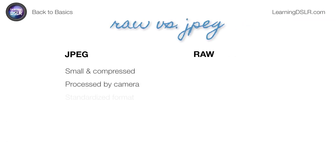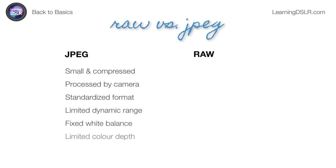In summary, JPEG is a very small file, relatively speaking, and it has compression — the kind of compression that actually degrades some of the image quality because it's losing some information every time you save it. It's processed by the camera, it's a standardized format, and because it is a tighter, smaller, and more compressed file, you're going to lose some of the total range that could theoretically be available to you — from the darkest dark to the brightest bright, you won't have quite as dynamic a range.